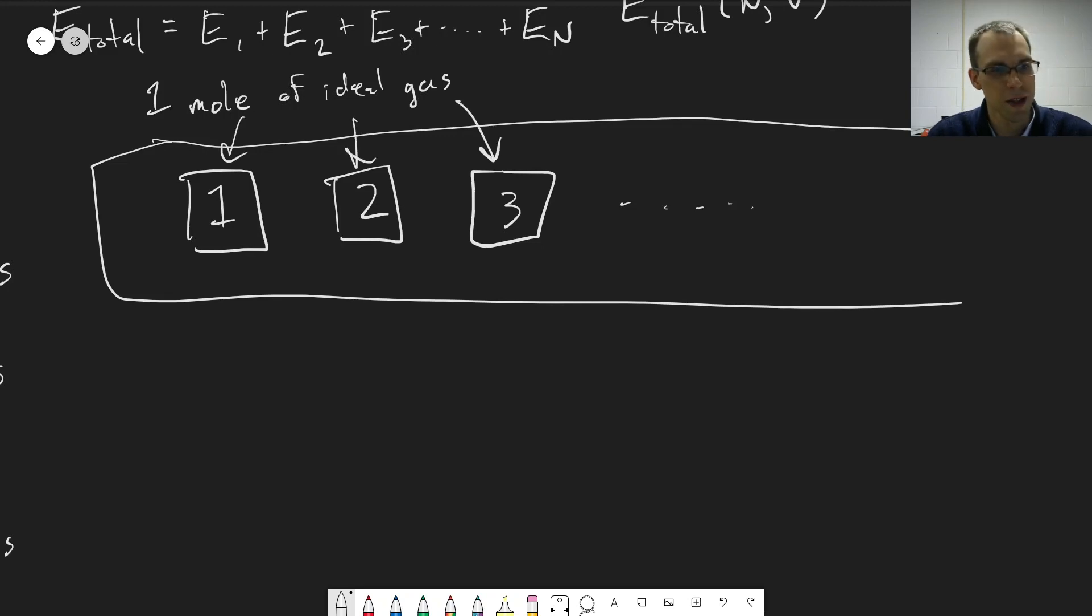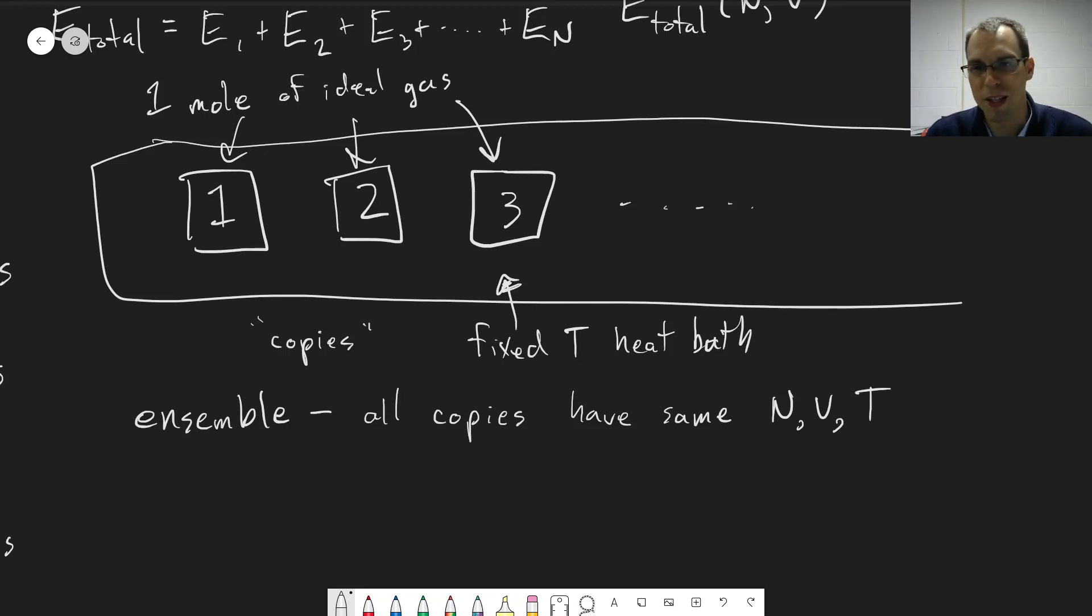And these copies of our systems, so these are copies of our original system. The copies of our system are in a heat bath at a fixed temperature. The point of this is that all of these systems are at the same temperature. That's the whole point of saying they're in this fixed heat bath. We call this an ensemble of states. And our ensemble, all of the copies have the same number of particles, the same volume, and the same temperature. So we're trying to keep that fixed across them. But their individual quantum states, what's happening on an individual level in each copy, is not the same.